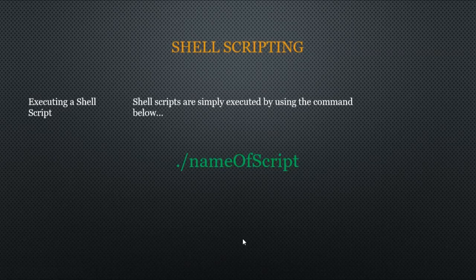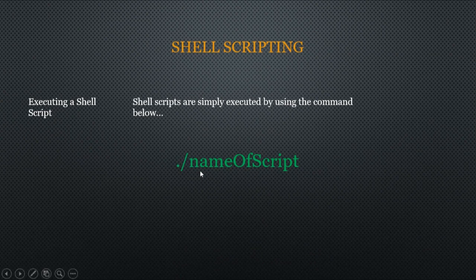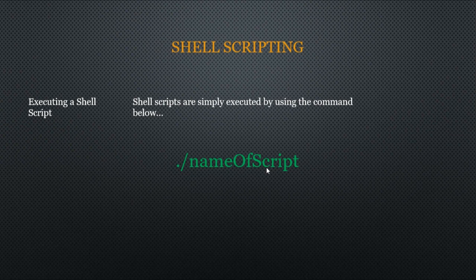How do we execute a shell script? Shell scripts are simply executed by using the command: period forward-slash followed by the name of the script you've written. Let's jump into our command line and try this out.